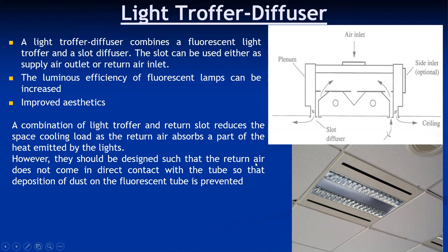The combination of a light troffer and return slot reduces the space cooling load, as the return air absorbs part of the heat emitted by the light. The luminous efficiency of the fluorescent lamp can be increased because cooling takes place via the return air, and it improves aesthetics since no separate diffusers are required. However, the system should be designed so that return air does not come in direct contact with the tube, to prevent dust deposition on the fluorescent tube.